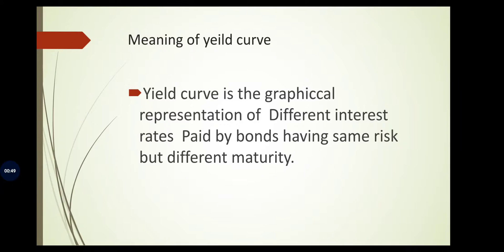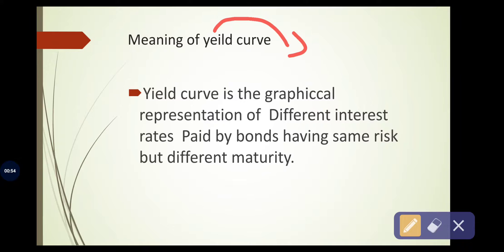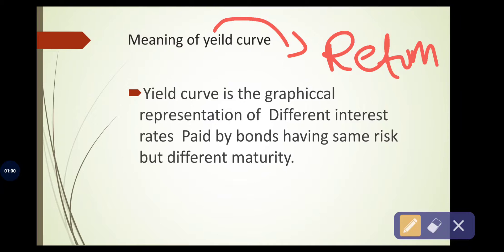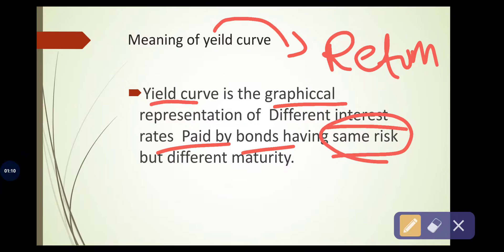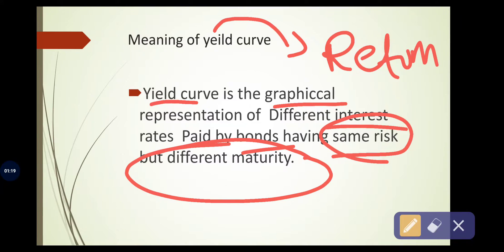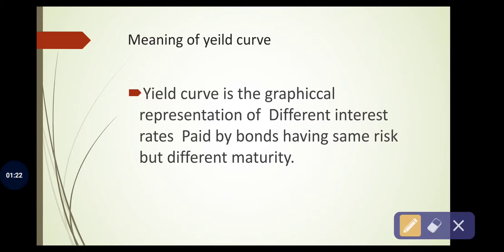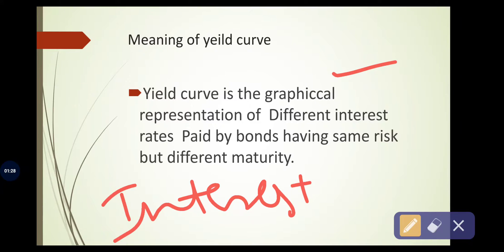First, what is the meaning of the word 'yield'? Yield means return. So yield curve is the graphical representation of different interest rates paid by bonds having the same risk but different maturity. In simple terms, it is a graphical representation of interest rates across different time periods.